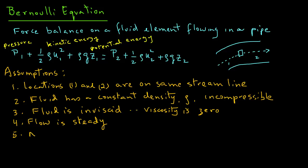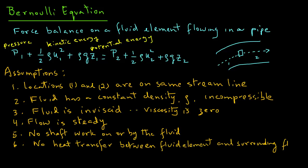Five, that there is no shaft work on or by the fluid. And six, that there is no heat transfer between the fluid element and the surrounding fluid. We can also rewrite Bernoulli equation as p plus 1 by 2 rho u square plus rho g z equals constant.